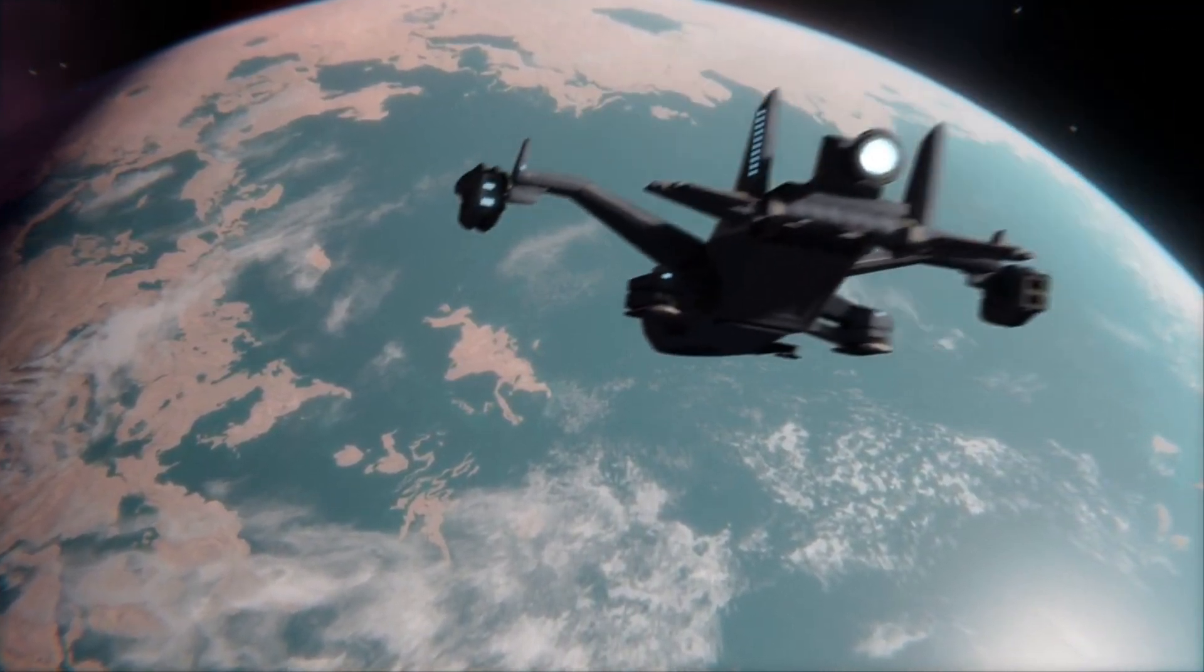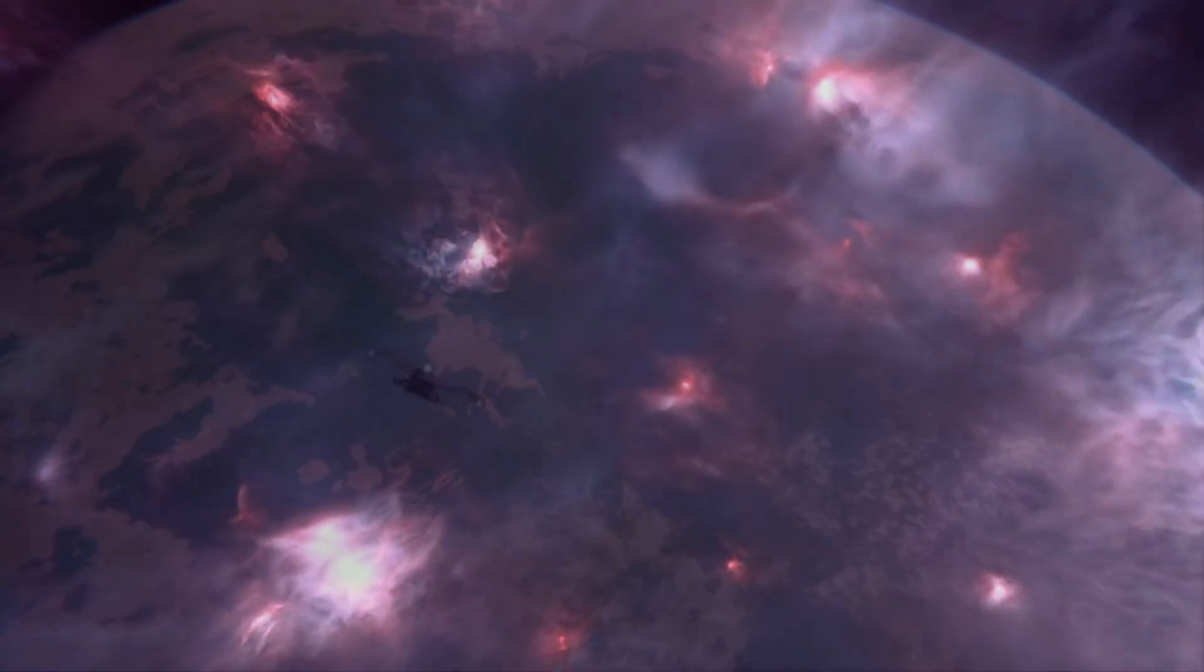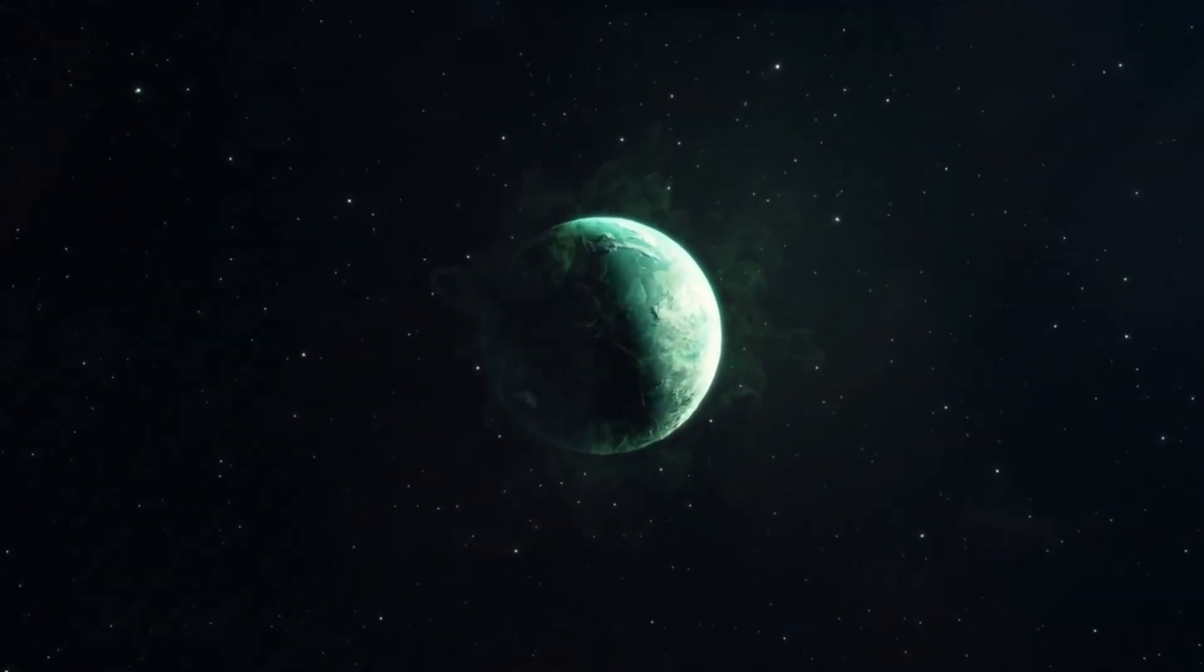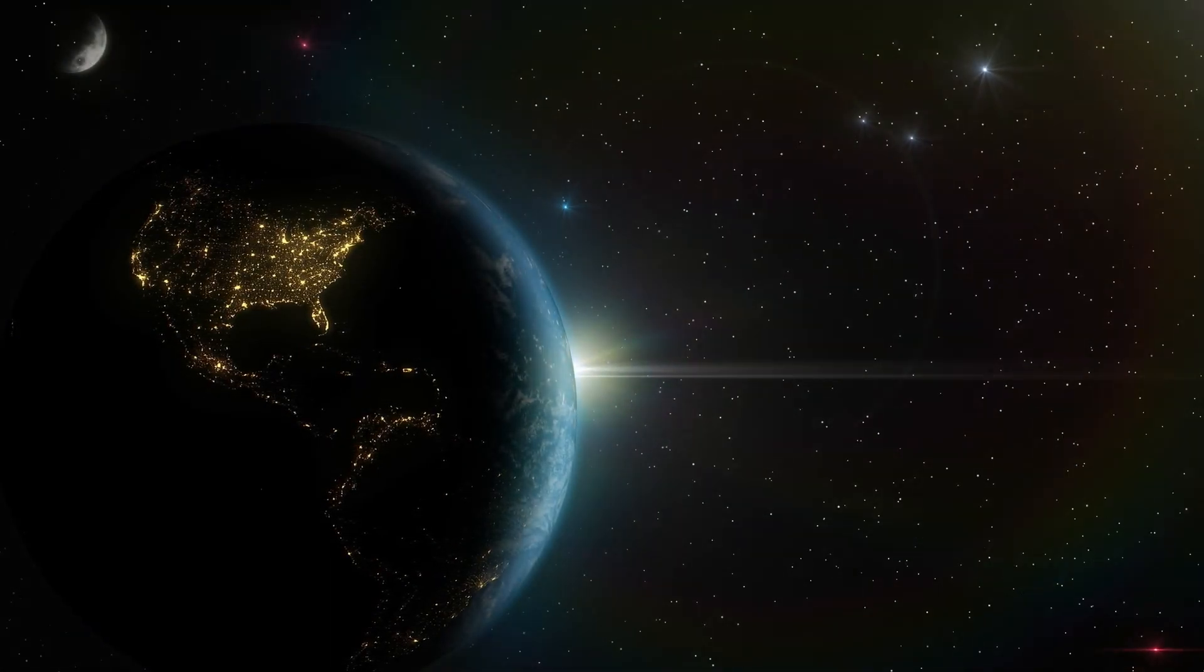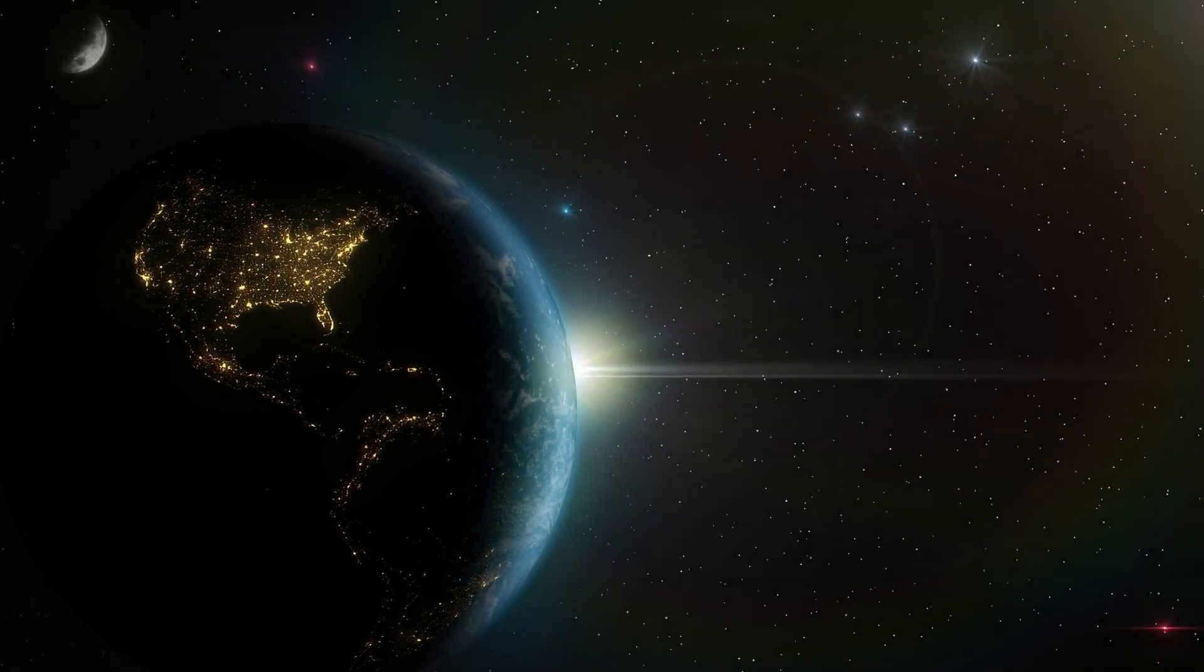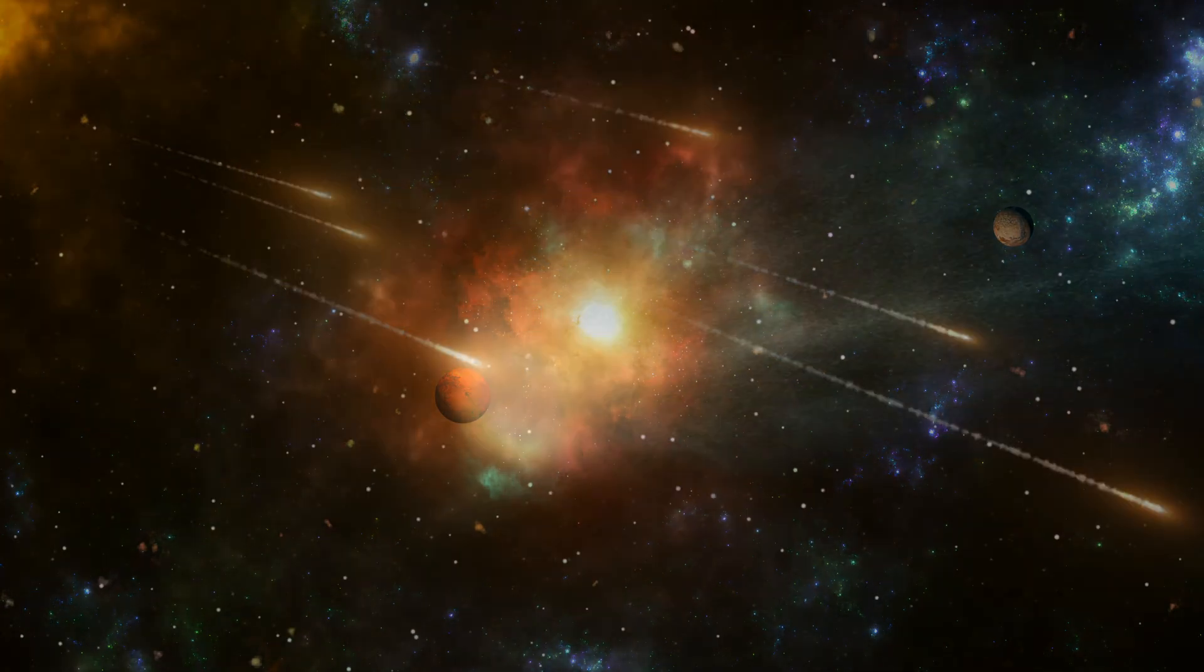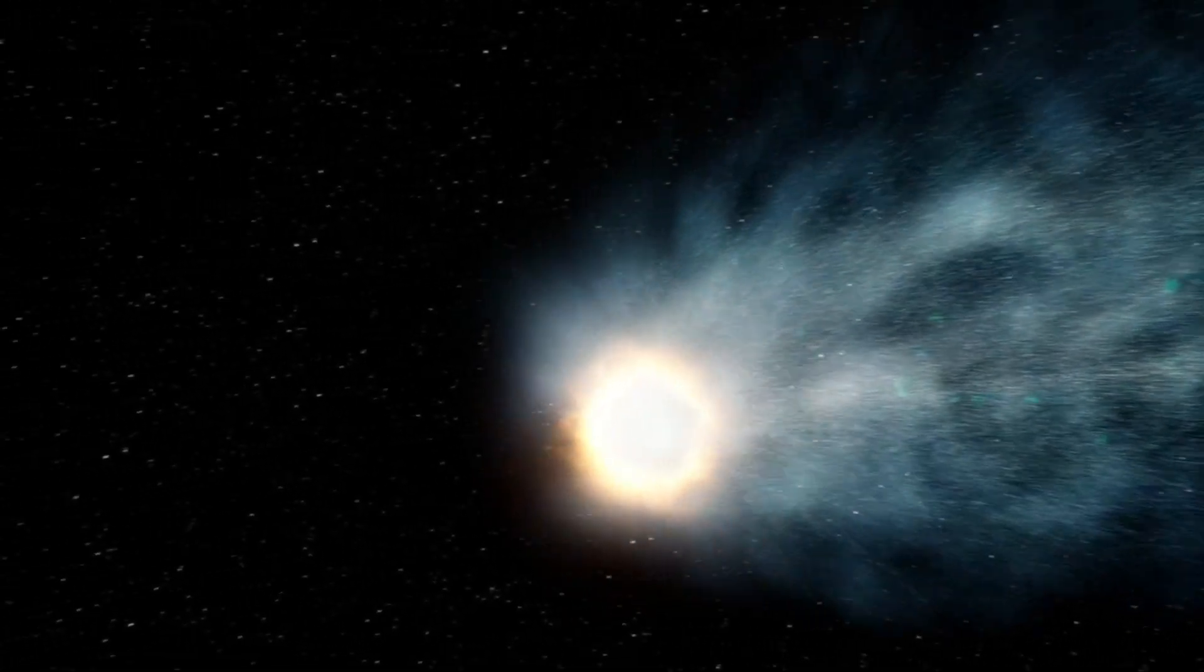Moreover, the Voyager spacecraft carry a message for any potential extraterrestrial life they may encounter. Each spacecraft is equipped with a golden record, a 12-inch gold-plated copper disk containing sounds and images selected to portray the diversity of life and culture on Earth. Curated by a team led by Carl Sagan, the records include greetings in 55 languages, music from different cultures and eras, and images depicting the physical, social, and cultural aspects of humanity.